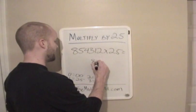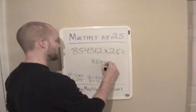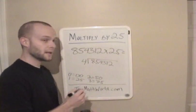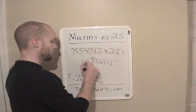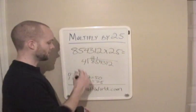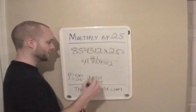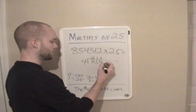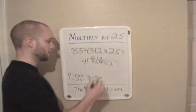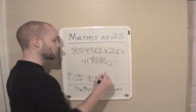And 854312 divided by 4. 4 goes into 8 two times. 4 goes into 5 one time with a remainder of 1. Go ahead and write that next to the next number. 4 goes into 14 three times with a remainder of 2. 4 goes into 23 five times with a remainder of 3. Go ahead and write my 3 next to the next number.